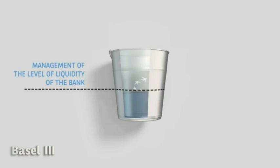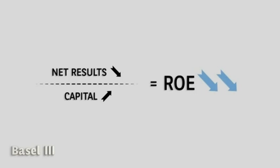At all times, enough liquidity has to be available to comply with the stress test. This will put pressure on the net results. Remember also that the required increase in capital must be set aside. So we are dividing something becoming smaller by something becoming larger. This leads to a reduction in return on equity for banks — a very tangible Basel III impact.